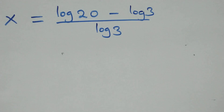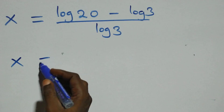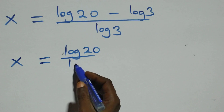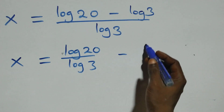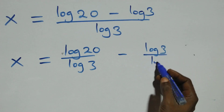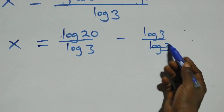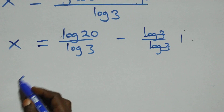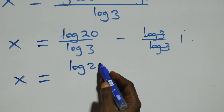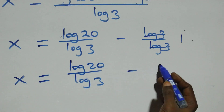We separate this into two fractions: x equals log 20 over log 3, minus log 3 over log 3. The log 3 over log 3 cancels to give 1, which implies x equals log 20 over log 3, minus 1.